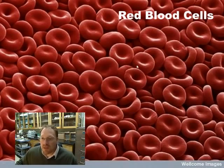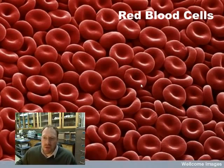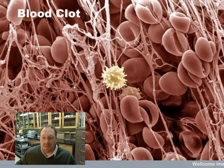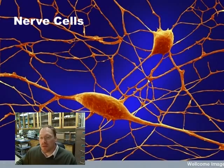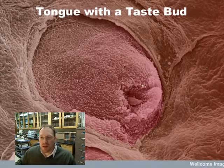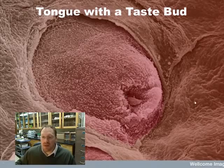This is a scanning electron microscope image of red blood cells — beautiful, almost donut-shaped objects. Here red blood cells are trapped in clotting factor protein, showing the beginning of a blood clot. These are nerve cells: the body of the cell and the long tube-like structures — the axons or dendrites — the endings of your nerve cells along which electrical impulses travel. This is a taste bud within a section of the tongue; this is what your taste buds look like on the surface.